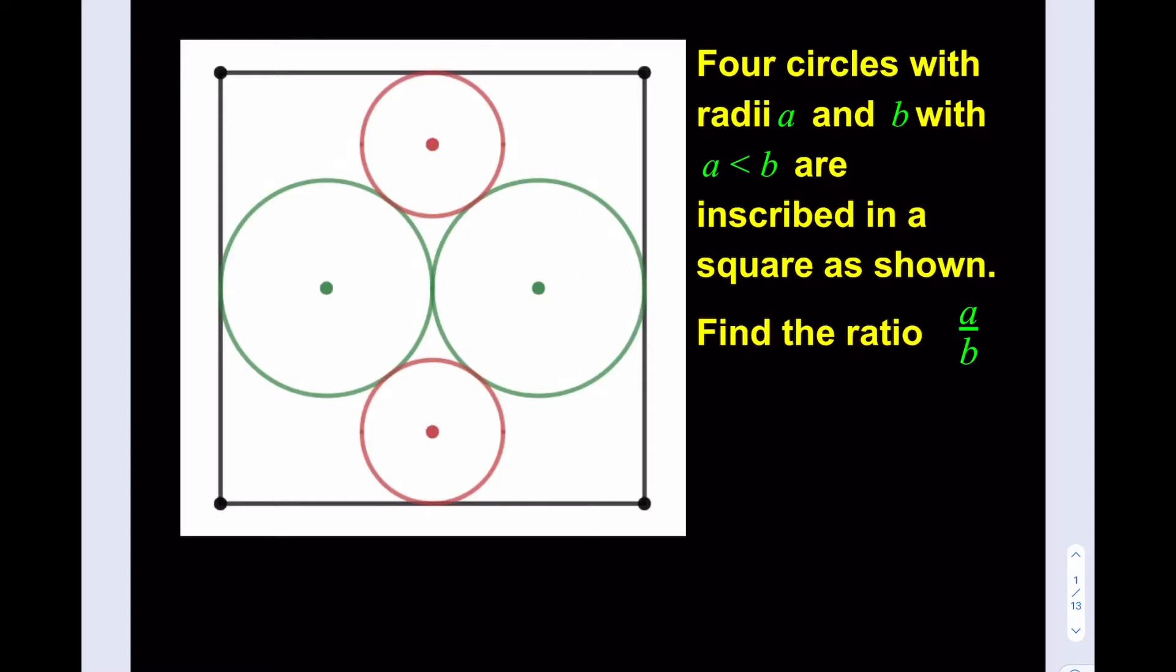Now, the only thing we know is that the radii are given, basically a and b, and a is less than b, so the red circles are smaller and their radius is a, and the green circles have radius b. So let's go ahead and make some connections here. And another thing we know is that they're inscribed in a square. The side length is not given, but I guess that's not going to change the ratio. Let's proceed.